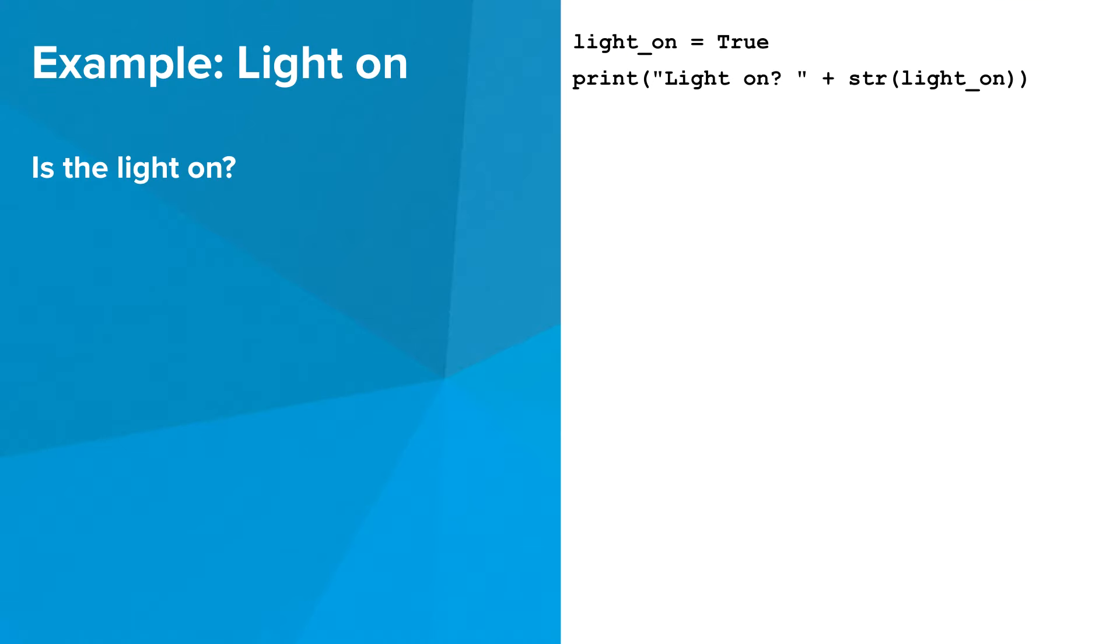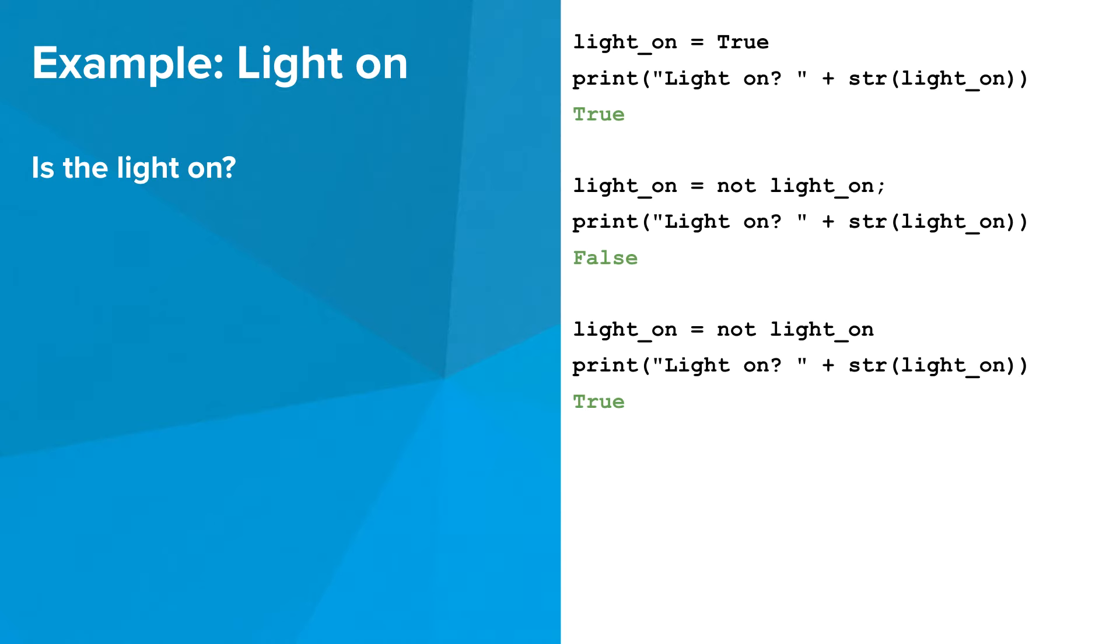Let's take a look at an example. In this program, we're going to turn a light on and off. Initially, our value is set to true. Using the not operator, we can switch the value and now see that our lights are not on. If we do it again, our light will come back on.